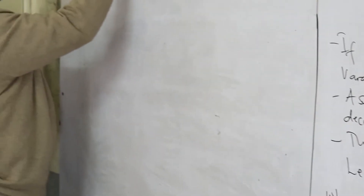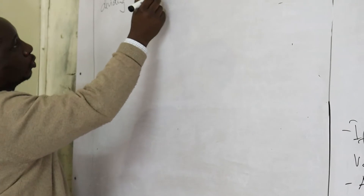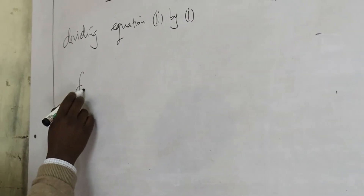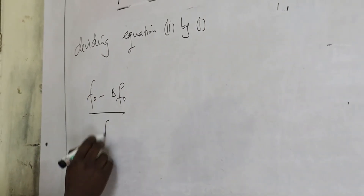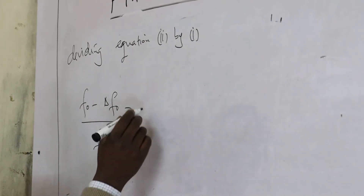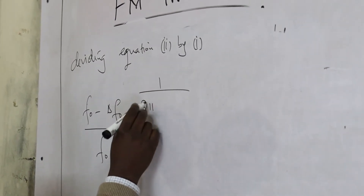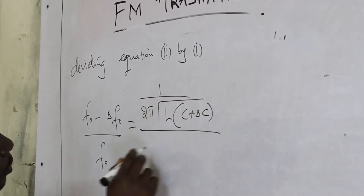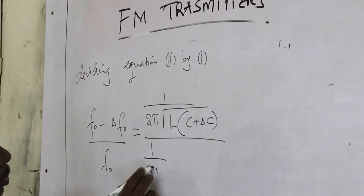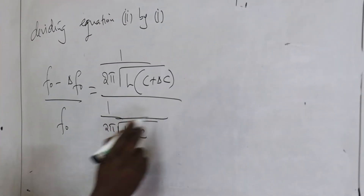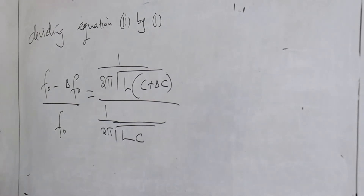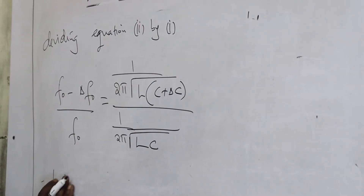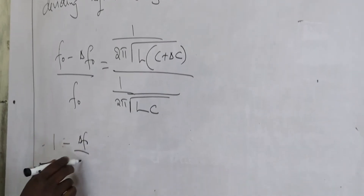Dividing equation 2 by equation 1: F₀ minus δF₀, we are supposed to begin by 1 over 2π√(LC + δC), over 1 over 2π√(LC). This gives 1 plus 1 minus δF₀ over F₀.